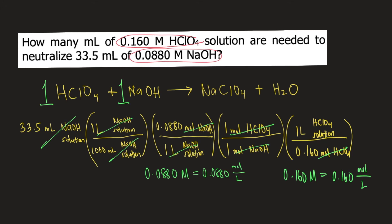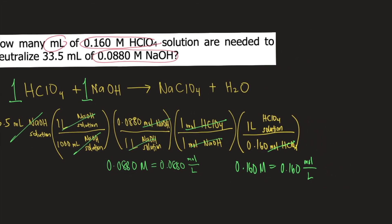But the problem is asking for ml. How many ml of the perchloric acid solution? So the final step in this solution is to convert liters to ml. We know that 1 liter is equivalent to 1,000 ml. This is perchloric acid solution. So liter will cancel and our final unit would be ml of the perchloric acid solution.